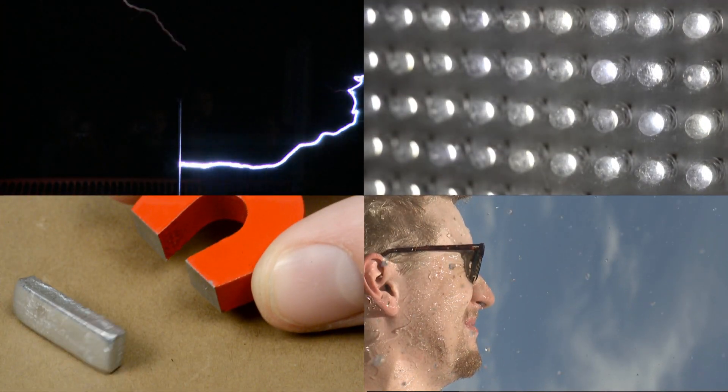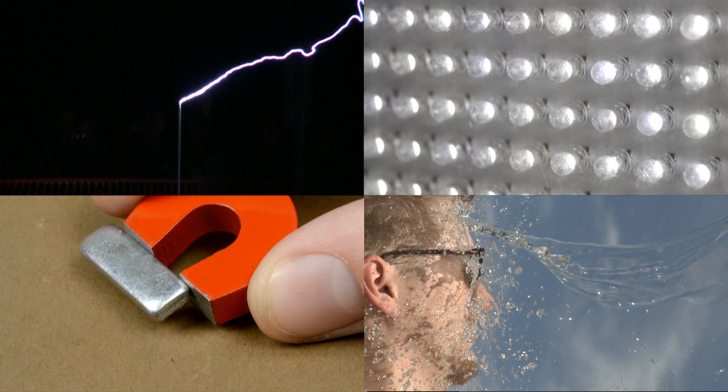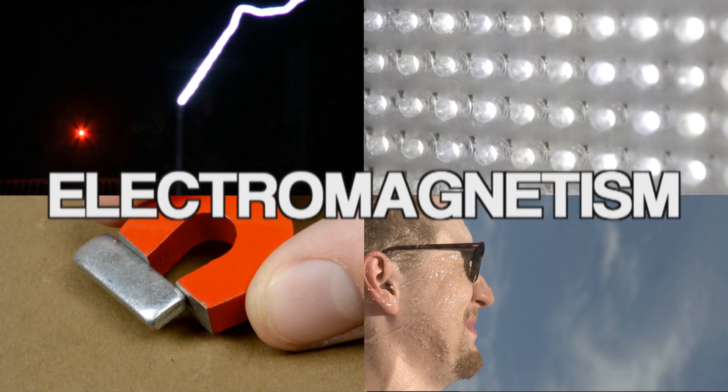But Maxwell's equations, first worked out in the 1860s, show just that. These very different phenomena had a single explanation called electromagnetism.